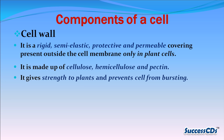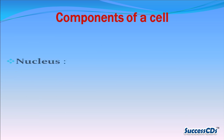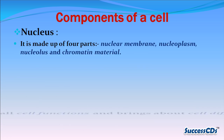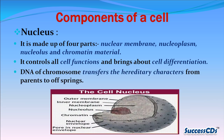Cell wall: it is a rigid, semi-elastic, protective and permeable covering present outside the cell membrane, found only in plant cells. It is made up of cellulose, hemicellulose, and pectin. It gives strength to plants and prevents the cell from bursting.